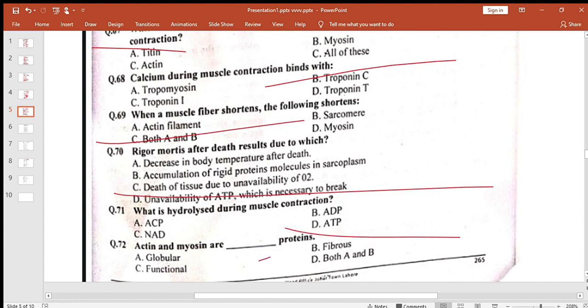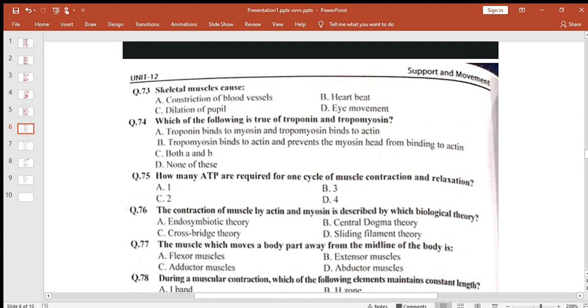Acting and myosin are fibrous proteins. Skeletal muscle causes eye movement, which of the following is true for troponin and tropomyosin? So tropomyosin binds to actin and prevents the myosin head from binding to actin. B option humare pas correct.